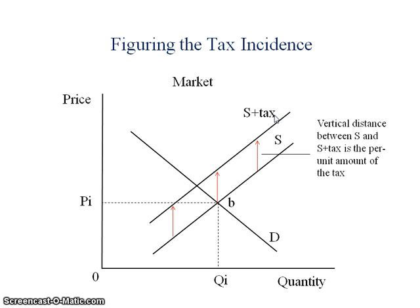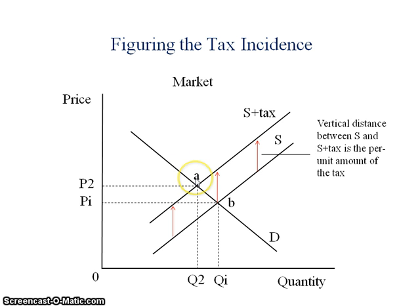So when this happens, we really have the establishment of a new market price and market quantity where the S plus tax curve intersects with the demand curve at point A. P2 then will be our new market price and Q2 will be our new market quantity.